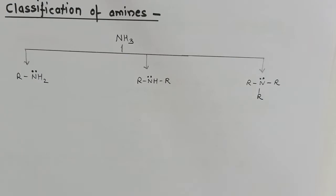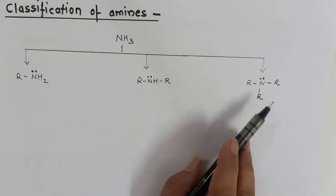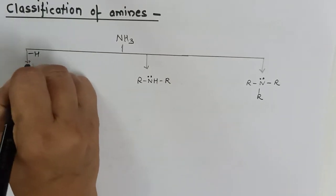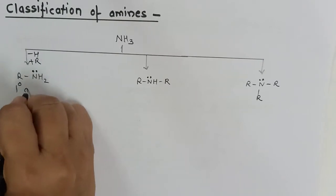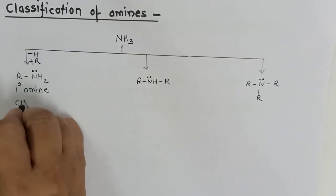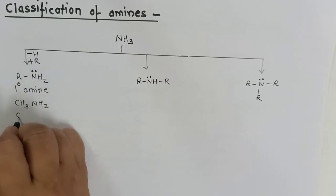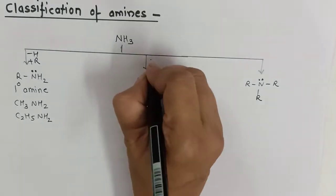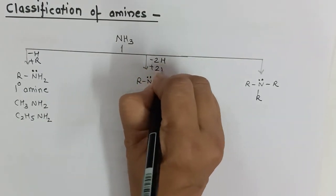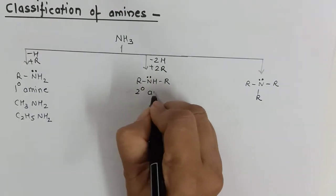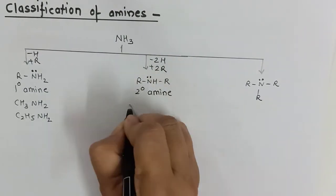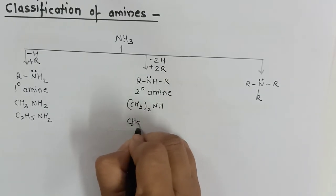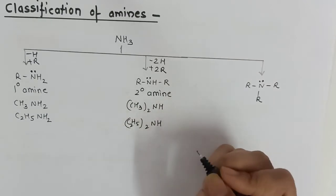Amines are classified based on the number of alkyl groups they possess. If one hydrogen from ammonia is replaced by one alkyl group, we get a primary (1°) amine — for example, methylamine or ethylamine. If two hydrogen atoms are replaced by two alkyl groups, we get a secondary (2°) amine — for example, dimethylamine or diethylamine.